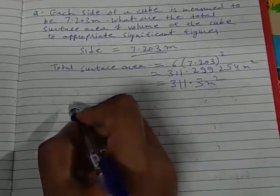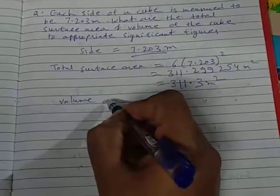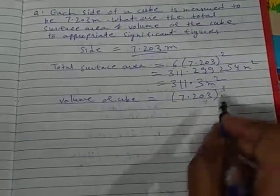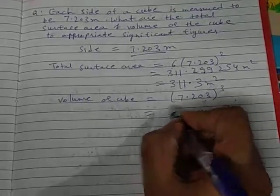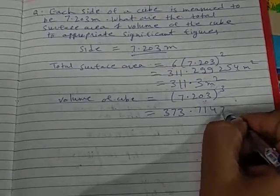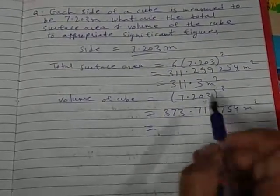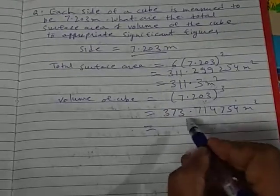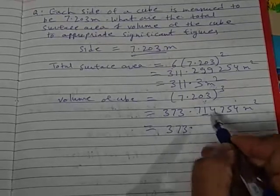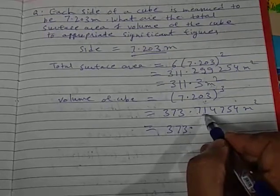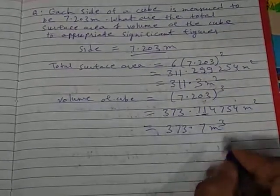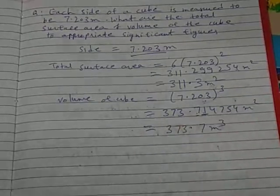Now what we have to calculate next is the volume. Volume of the cube equals (7.203)³. When you solve it, you get 373.714754. Again your answer should come in 4 significant figures — so 373.7 meter cube. That will be your answer. Thank you.